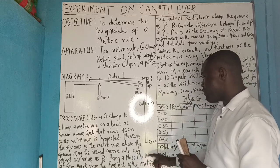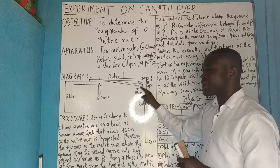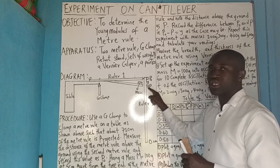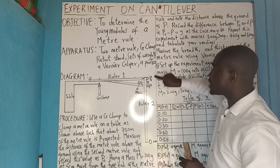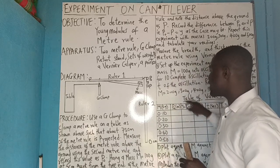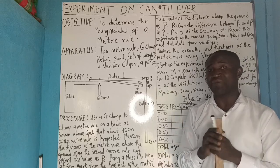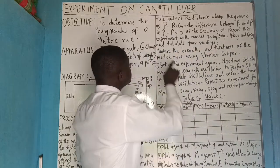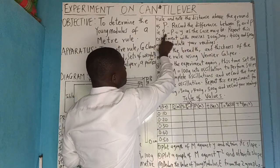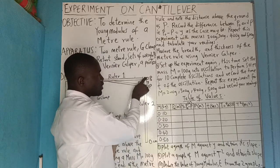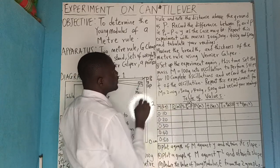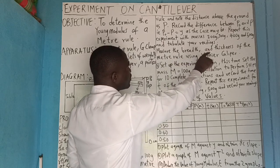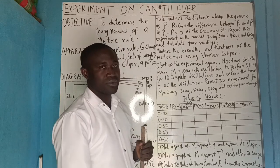When we hang M equals 100 grams, the meter rule will depress or bend. Take the distance from the ground to it and call it P. Then subtract P from Po to get your Y. That is how to perform it in the laboratory. Record the difference between Po and P as Y. Then repeat this experiment with masses of 200 grams, 300 grams, 400 grams, 500 grams, and tabulate your readings.